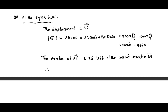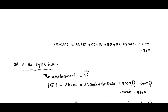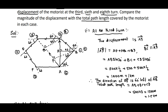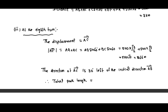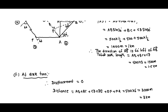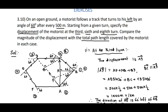Now, the total path length at the 8th turn: the motorist has traveled AB + BC + CD + DE + EF + FA + AB + BC, which is 8 times 500 = 500 × 8 = 4000 meters, or 4 kilometers. So these are the distances and displacements covered by the motorist in each case.